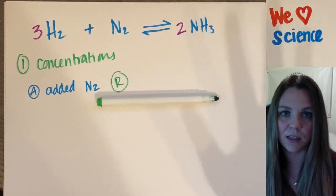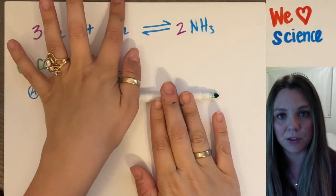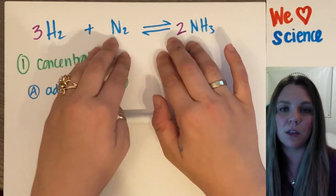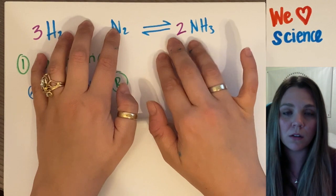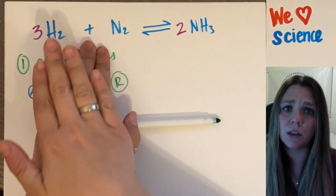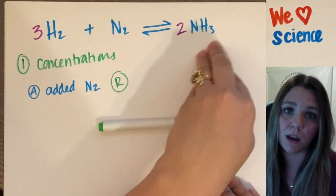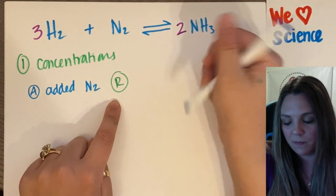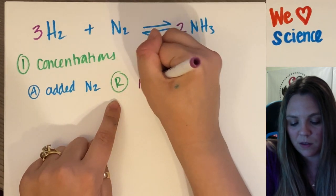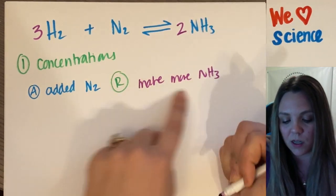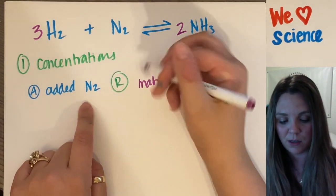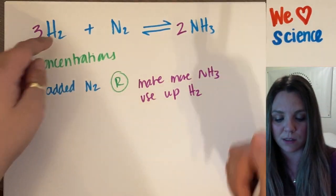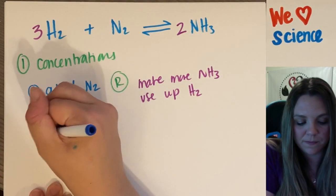Think about this with Le Chatelier's principle: if I added nitrogen, my equilibrium wants to adjust to balance that out. It was at equilibrium, and all of a sudden there's a ton of nitrogen on the reactant side, so it needs to make more on the product side to even it out. Shifting right means I'll make more NH₃ — the concentration of NH₃ goes up — and I'll use up H₂, so the concentration of H₂ goes down. For example B, what if I added NH₃?